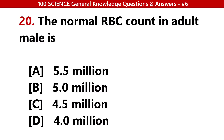The normal RBC count in adult male is? Answer B: 5.0 million.